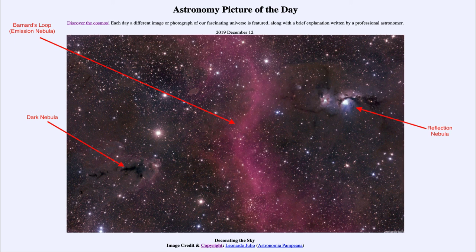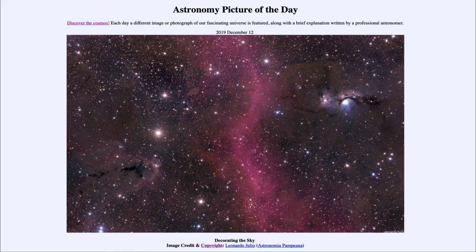Here we get to see the three different types of nebulae: the reflection nebula, the emission nebula, and the dark nebula. So that was our picture of the day for December the 12th of 2019, titled Decorating the Sky. We'll be back again tomorrow for the next picture. Until then, have a great day everyone and I will see you in class.